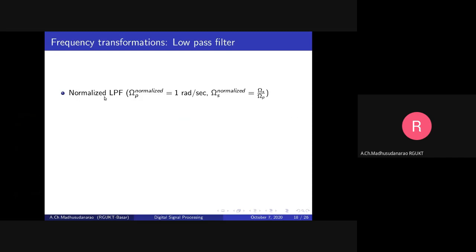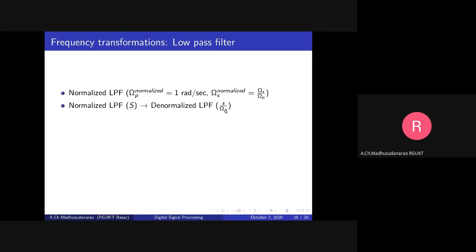Here are the specifications for the normalized low pass filter. Normalized low pass filter means the passband cutoff frequency will be equal to 1 radian per second — Omega P normalized equals 1 radian per second. If you consider the stopband cutoff frequency for the normalized low pass filter to be equal to Omega S by Omega P, then capital S corresponds to the normalized low pass filter, and the denormalized low pass filter corresponds to S by Omega P.